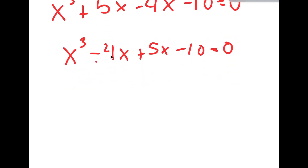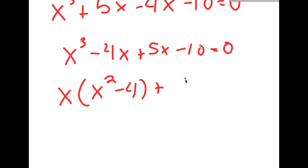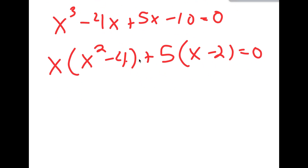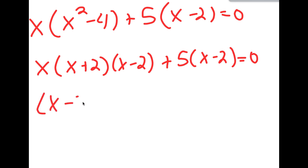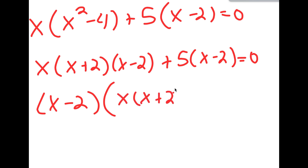Now I'm going to factor by grouping. The greatest common factor from x to the power of 3 minus 4x is x, so I get x times x squared minus 4, plus from 5x minus 10 the greatest common factor is 5, so I get 5 times x minus 2 equals 0. I can rewrite x squared minus 4 as x plus 2 times x minus 2, and then factor out x minus 2. So I get x minus 2 times x times x plus 2 plus 5 is equal to 0.